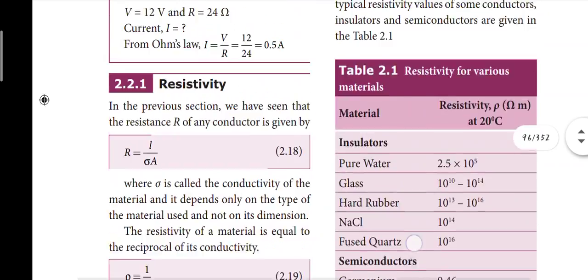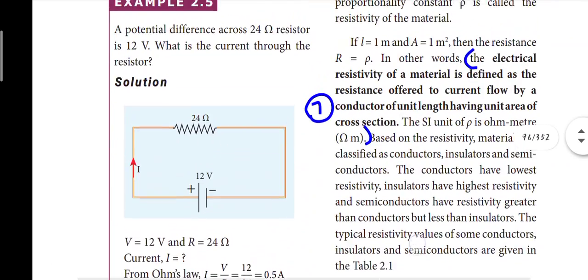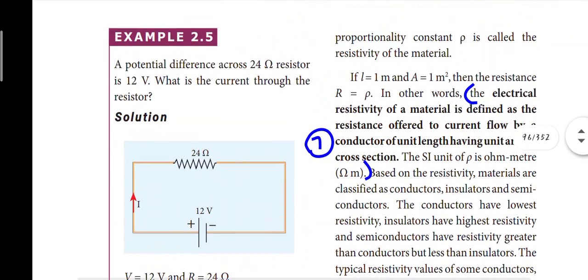Page 88: electrical resistivity is defined as the resistance offered to current flow by a conductor of unit length having unit area of cross-section.